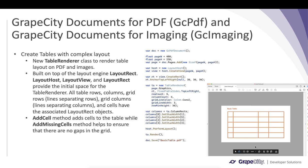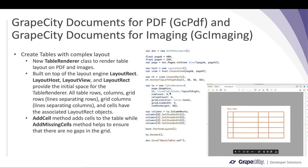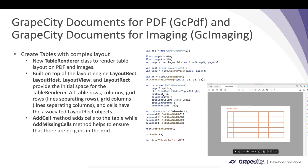Then you define the TableRenderer class. The first parameter is the page's graphics object on which you need to draw the table, the second is your LayoutRect object, and the third is the FixedTableSize.TopLeftRight parameter because the table is fixed from the top, left, and right. Then you define the row count and column count for the number of rows and columns in the table.